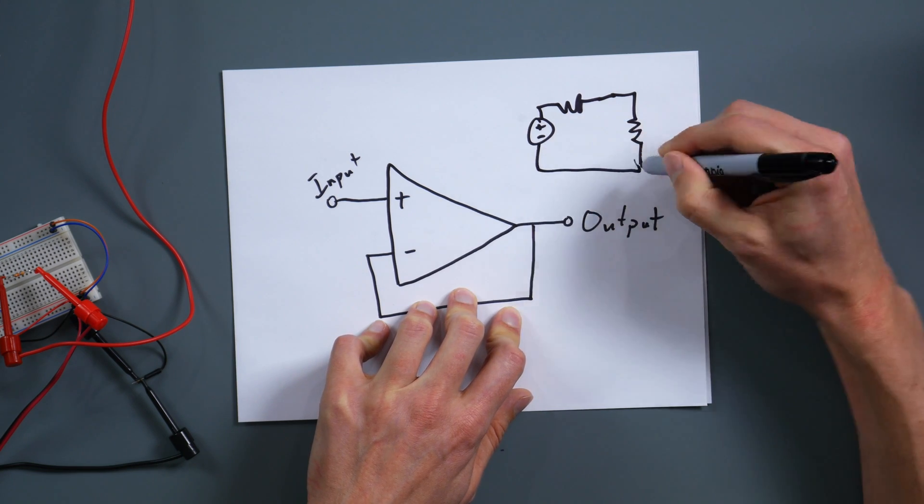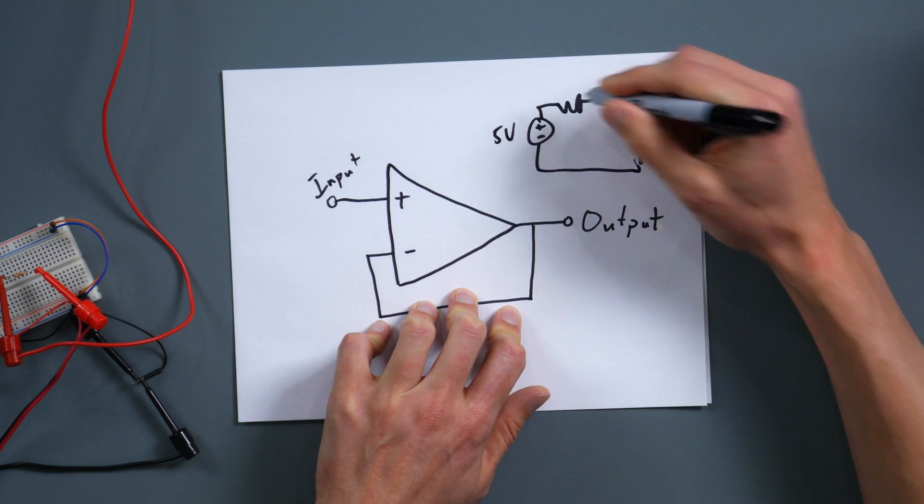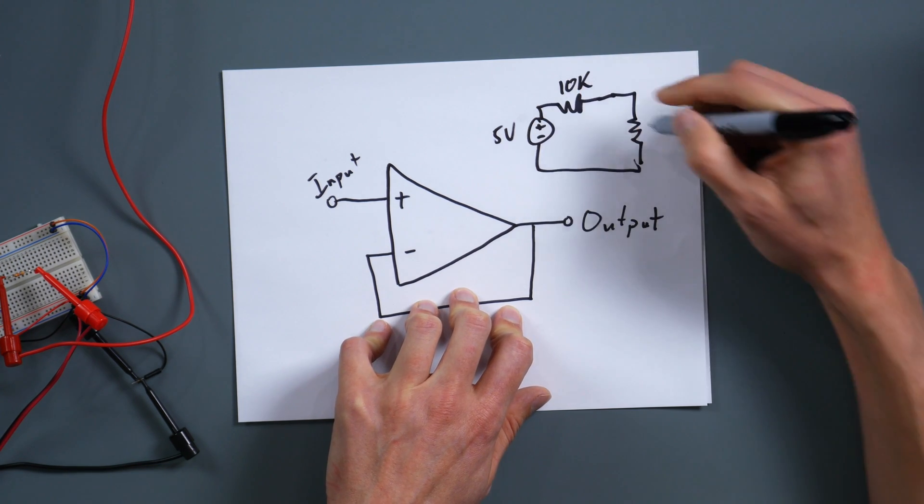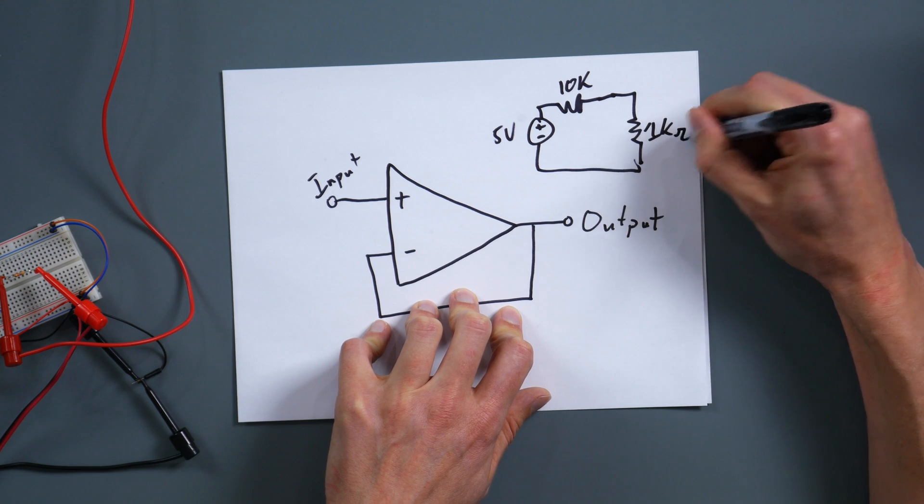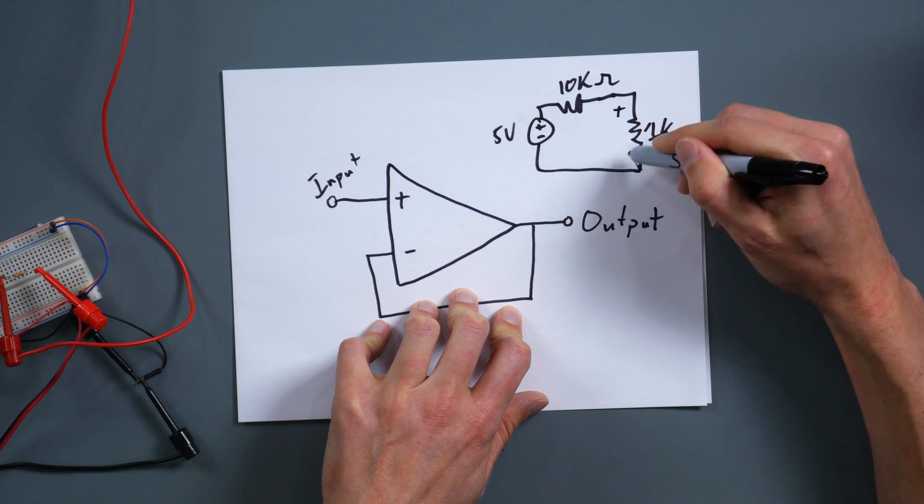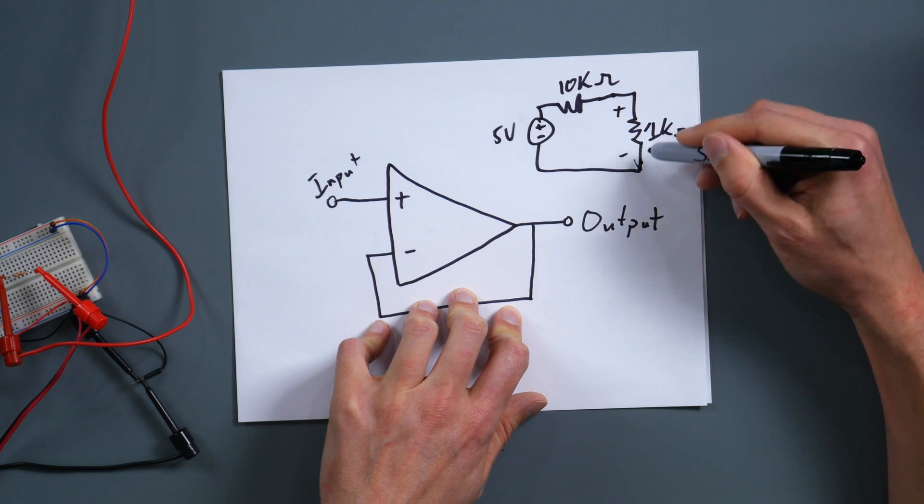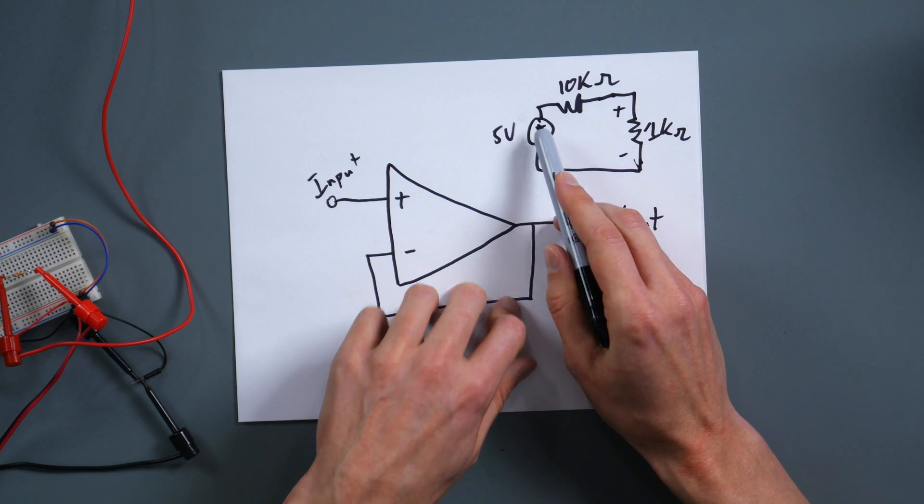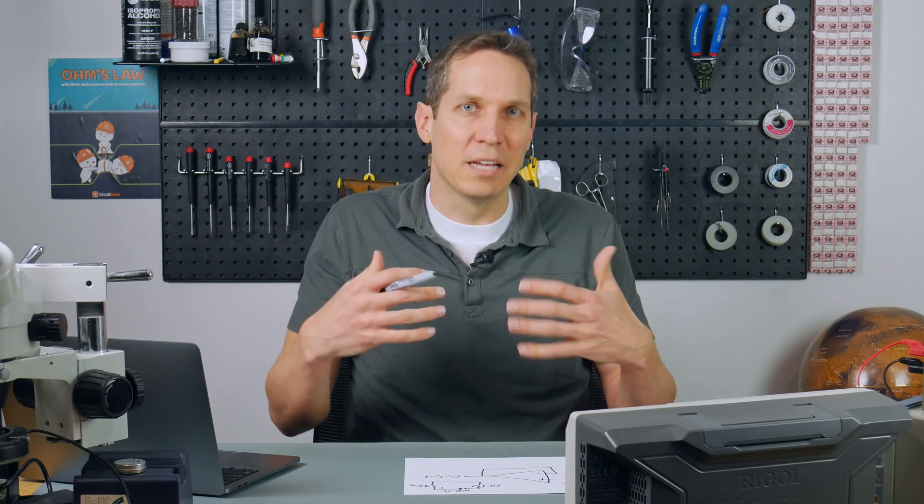So if you are to have a 5 volt load here, and then a let's just say 10,000 ohm resistor right there, and then you had a 1000 ohm resistor right there, you are not going to see five volts over this resistor right here because you have this impedance right here that is basically acting as a high impedance output.